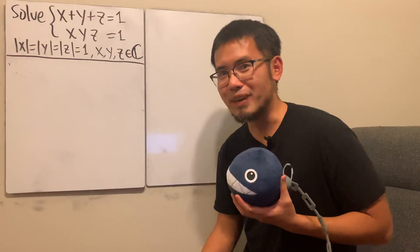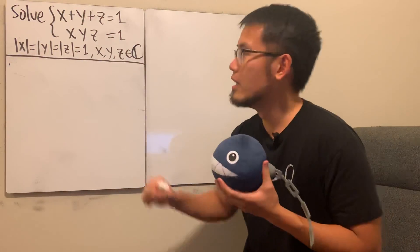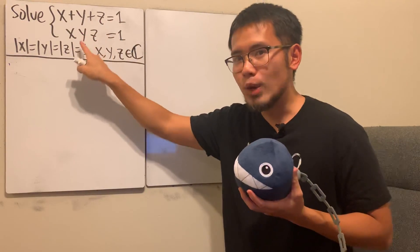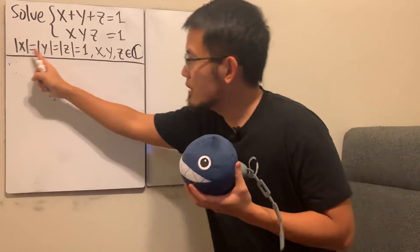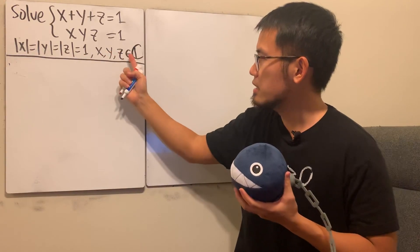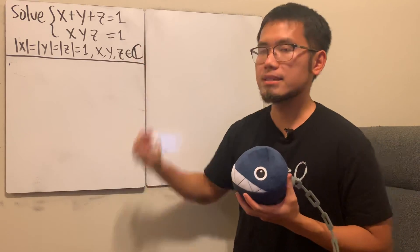Hello, that's DoSumma for fun. Here is the equation for you guys. We are going to solve x plus y plus z equals 1, x times y times z equals 1, and notice that their absolute values are all equal to 1. Lastly, x, y, z belong to the set of complex numbers.